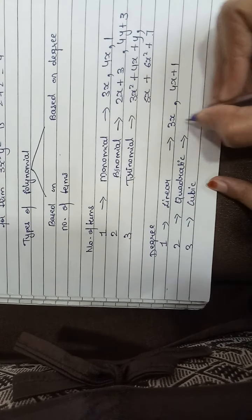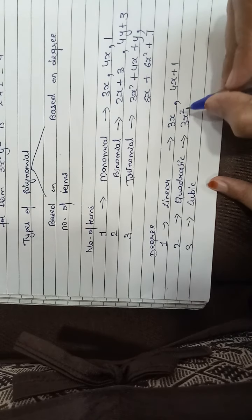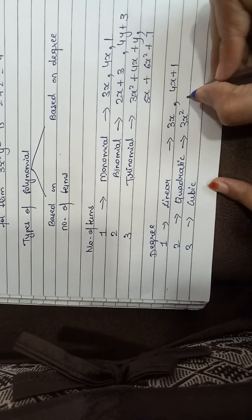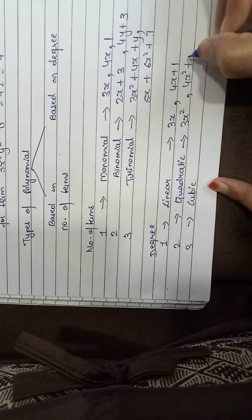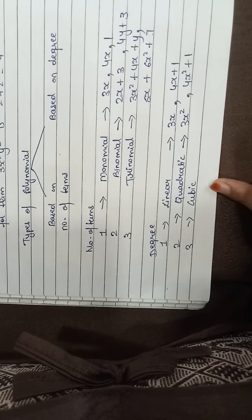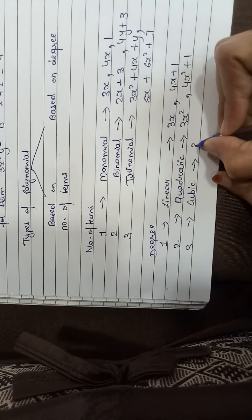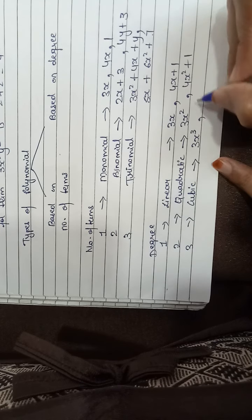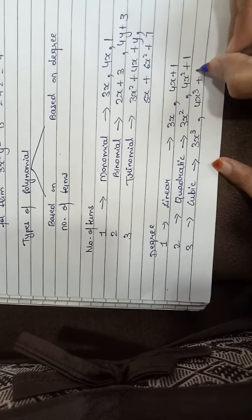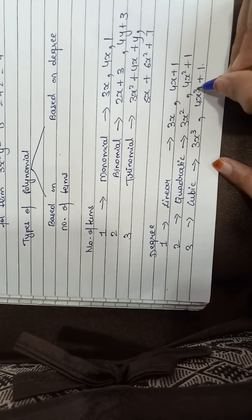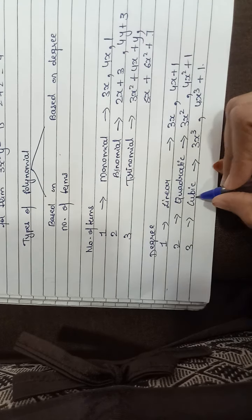Now coming to quadratic. With the example 3x square — when the degree is 2 it becomes quadratic, so this is a quadratic polynomial. Even if there are 2 terms, the highest degree should be 2 — so it is quadratic. For cubic: 3x cube — here the degree of x is 3, so it is a cubic polynomial. Same with 4x cube plus 1 — there are 2 terms but the highest degree is 3, so it is a cubic polynomial.